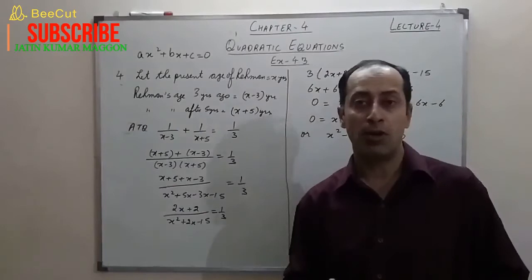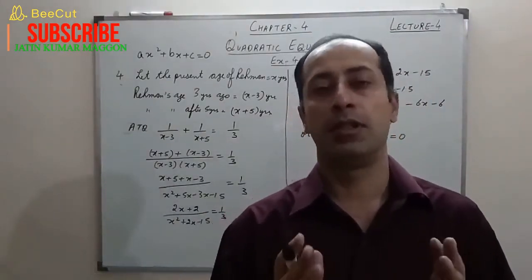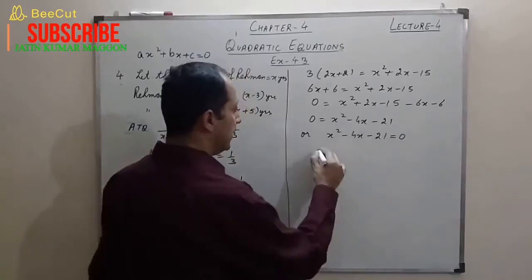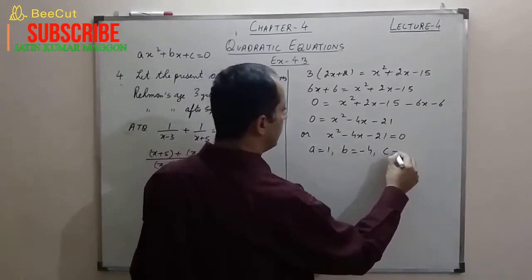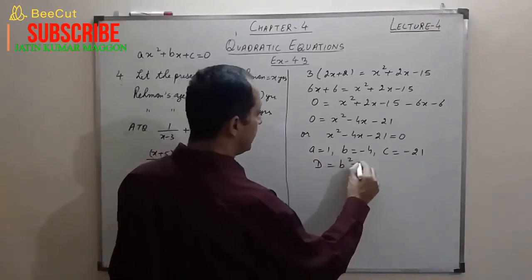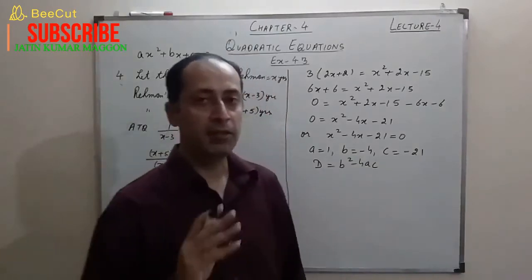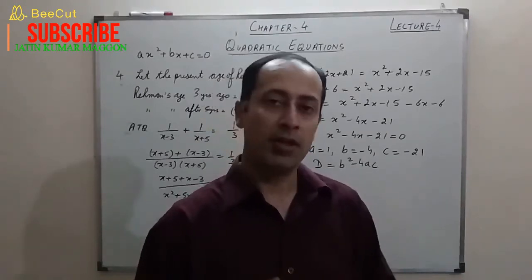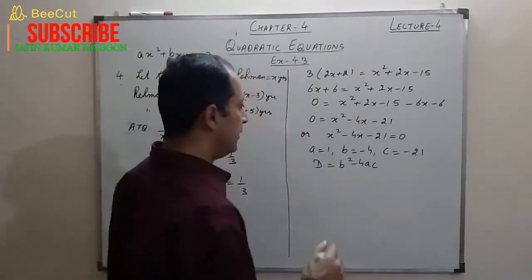So we have x²−4x−21 = 0. We can try splitting the middle term, but this time let's use the quadratic formula. Here a = 1, b = −4, c = −21. Finding the discriminant: D = b²−4ac = (−4)²−4(1)(−21).